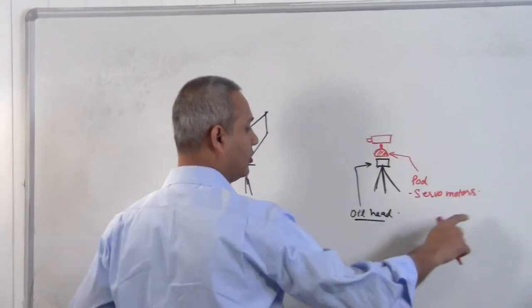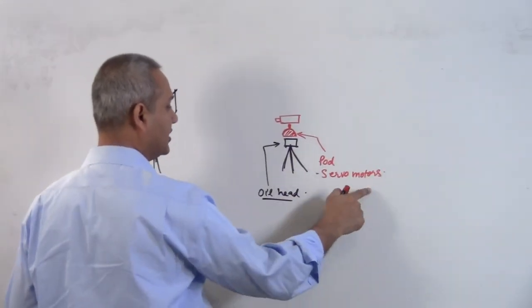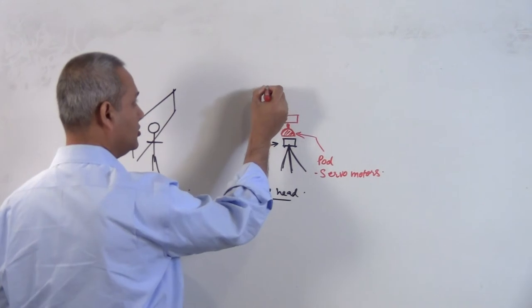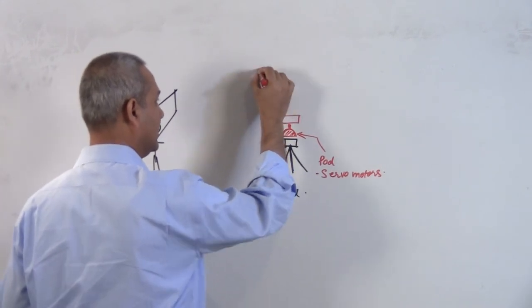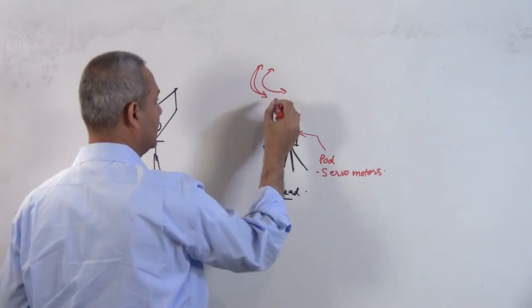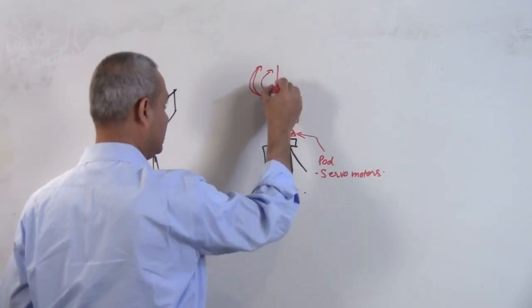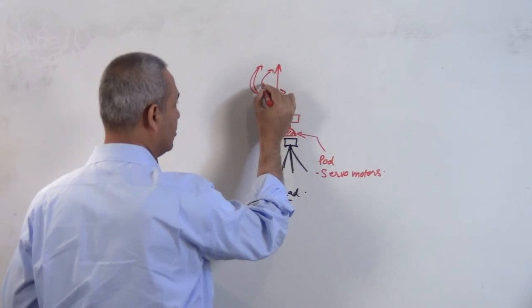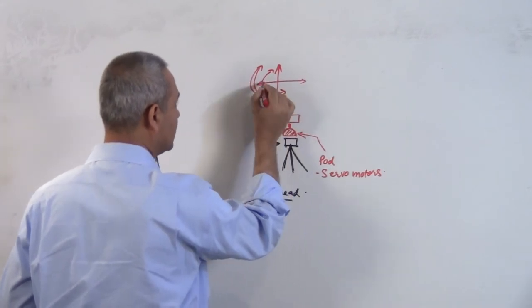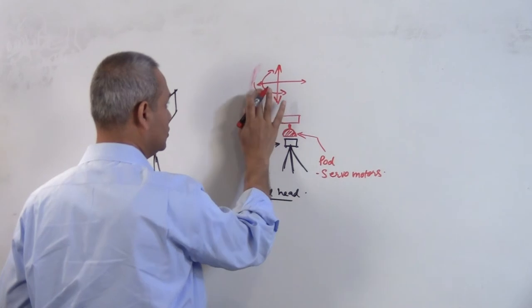This pod here has servo motors which allow the pod to pan and tilt. It can move upward and down, and it can pan and tilt. The only thing I cannot do at this time is zoom in and out.